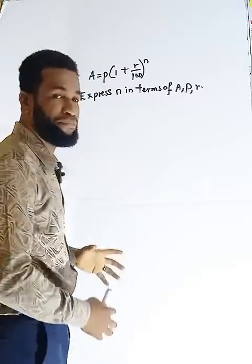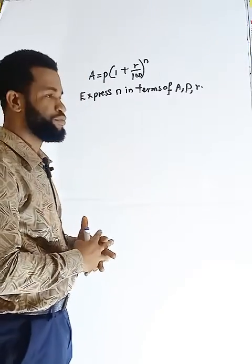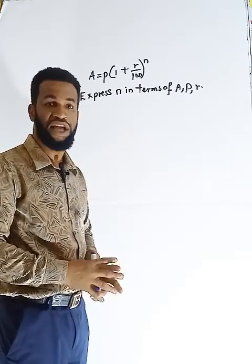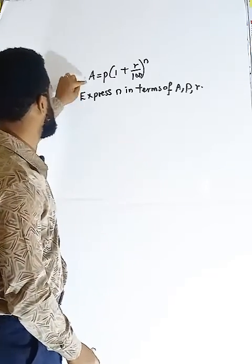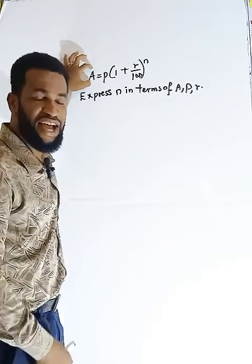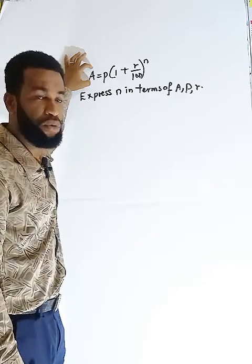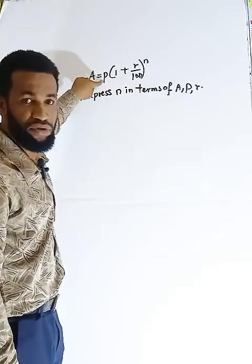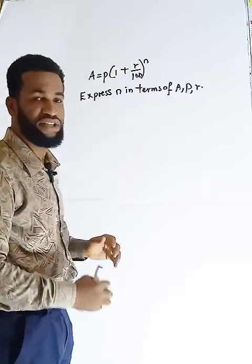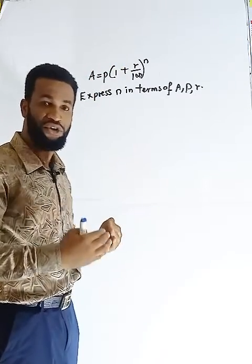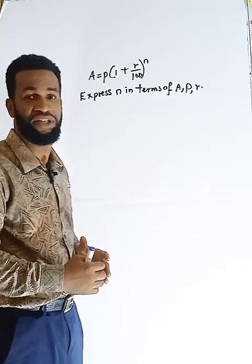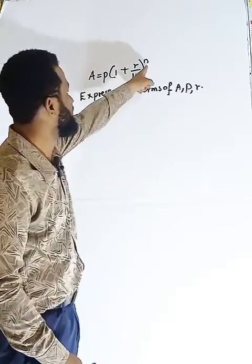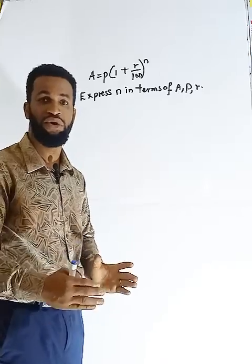If you look at this formula, this is the formula banks use to know how much you pay at the expiration of the amount of money you borrowed. This is the amount you are going to pay after the expiration of the loan. This is the amount you borrowed, which is called the principal. R over 100 is the percentage at which your loan is increasing, depending on the time, maybe per month or per year, depending on agreement. While this N is how long the loan will last.